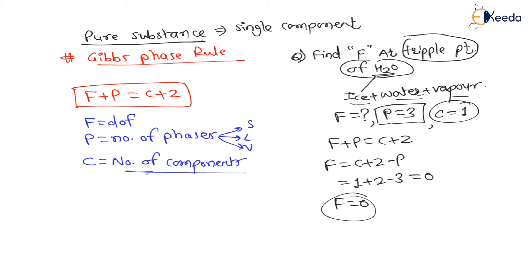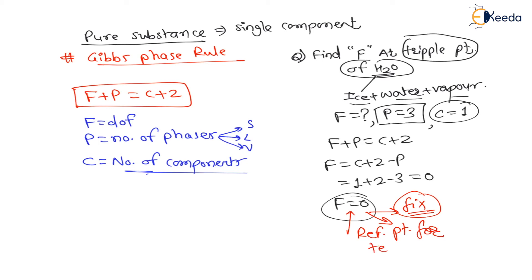Degree of freedom equal to zero means the number of independent coordinates required to specify the state of the system is zero, meaning this point is always at a fixed location and will not change its position. Hence the triple point of water serves as a reference point for temperature measurement, as studied in the previous lecture.